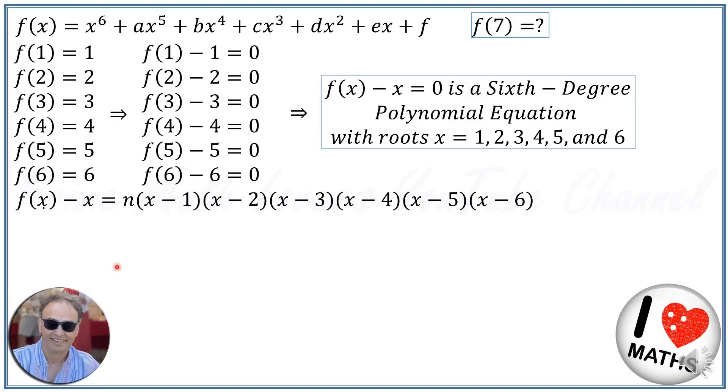On the other hand, the coefficient of x to the power of 6 here is 1. This means that n has to be 1, and we can rewrite the equation as f(x) - x = (x - 1)(x - 2)(x - 3)(x - 4)(x - 5)(x - 6).